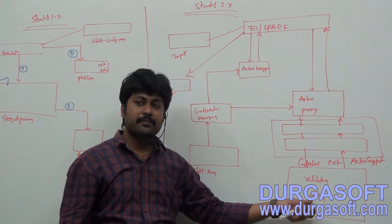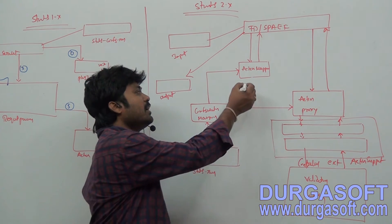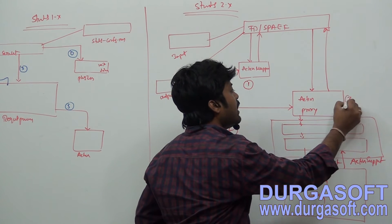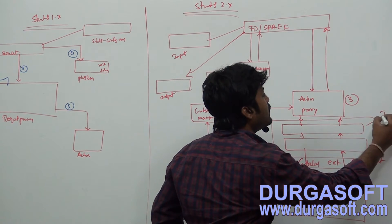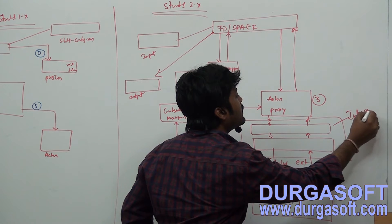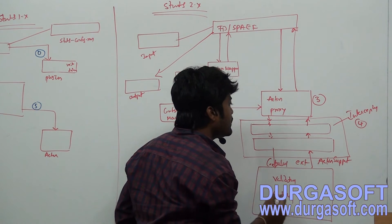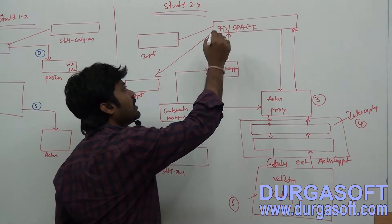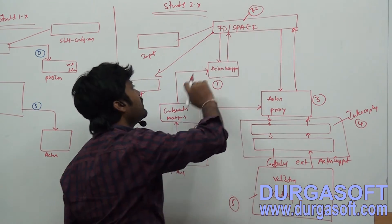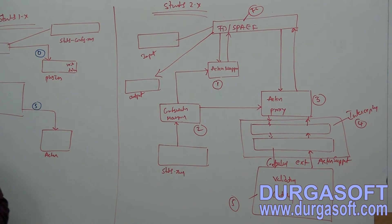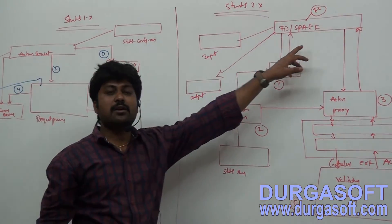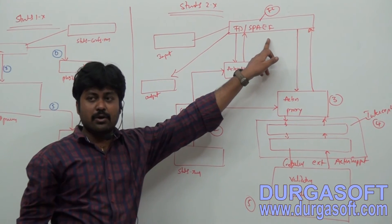ConfigurationManager passes XML file data to ActionProxy so it can understand which interceptors need to execute for your controller. The main required components are: ActionMapper, ConfigurationManager, ActionProxy, interceptors, and the controller. The front controller in Struts 1x is a Servlet, while in Struts 2x the front controller is a Filter class.